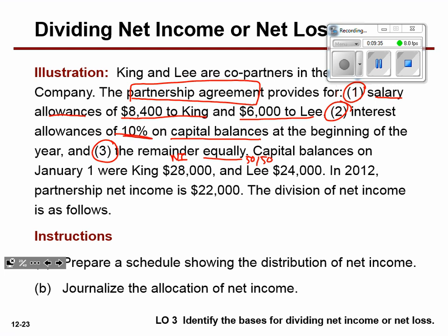This is complicated. They want to pay partners a salary, give them a 10% sort of bonus on their capital account, and then whatever is left over for net income, after those first two pieces, they share 50-50. Capital balances as of January 1 were $28,000 and $24,000, so they get 10% of that. In 2012 they had $22,000 in net income. The division of net income asks us to break that down on a schedule and then journalize it.